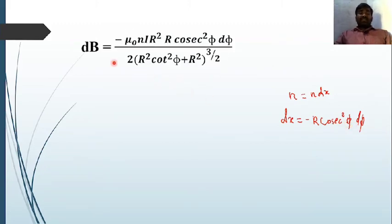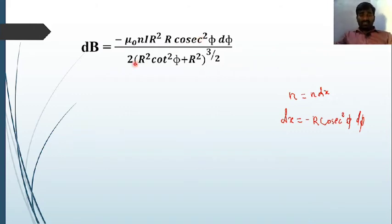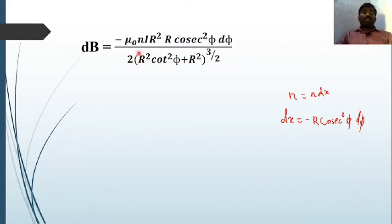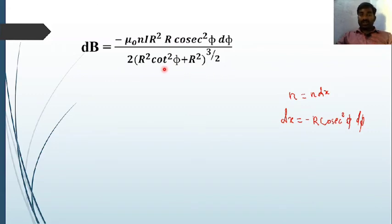Substituting dx = −r·cosec²φ·dφ into the dB equation gives dB = −μ₀nI·r²·r·cosec²φ·dφ / [2(r²cot²φ + r²)^(3/2)]. Taking r² common from the denominator bracket gives r² whole power 3/2, simplifying to r³. The r³ in numerator and denominator cancel. Using the identity cot²φ + 1 = cosec²φ, we get (cosec²φ)^(3/2) = cosec³φ.